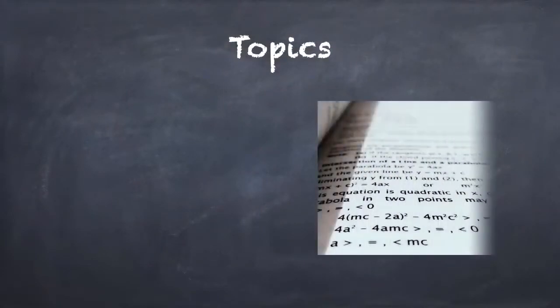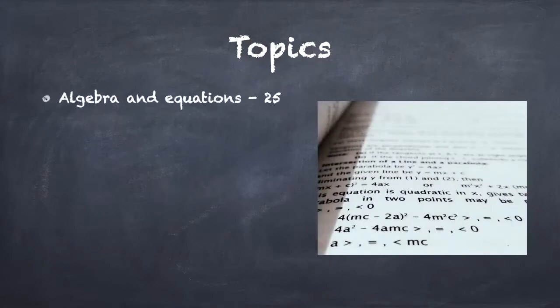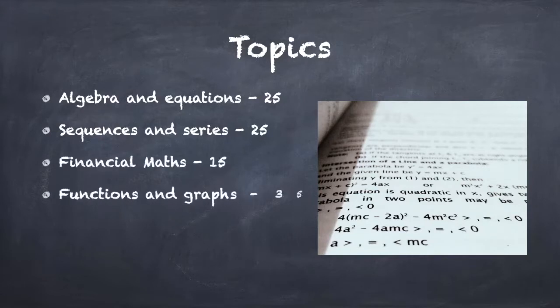When I start looking at my preparation, I've got to understand that there's six topics. First is algebra and equations, which include inequalities, about 25 marks out of 150. Then sequences and series, geometrical sequences, arithmetic, quadratic, as well as infinite series. Then there's financial maths, about 15 marks. Functions and graphs, 35 marks. Calculus, 35 marks. And probabilities, 15 marks.